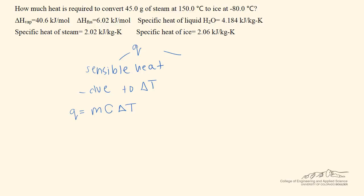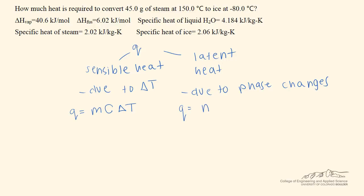We also have a type of heat called latent heat, and this is due to phase changes. The formula is a bit different: Q is equivalent to N, the number of moles, times delta H of fusion, vaporization, etc., whatever the phase change may be. I'm using mass for one formula and moles for another, and this is based on looking at the information given in the problem statement.